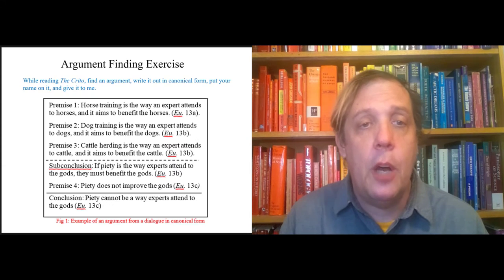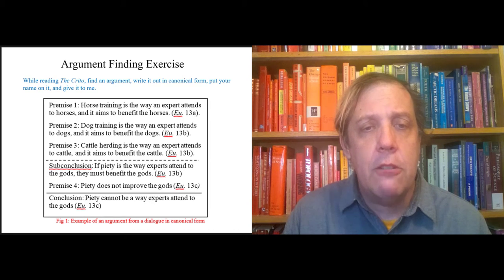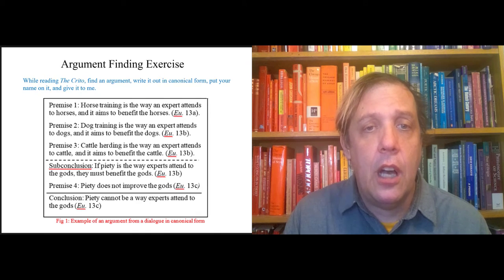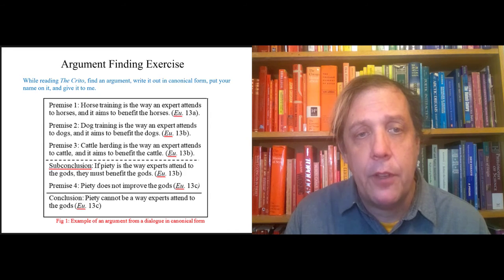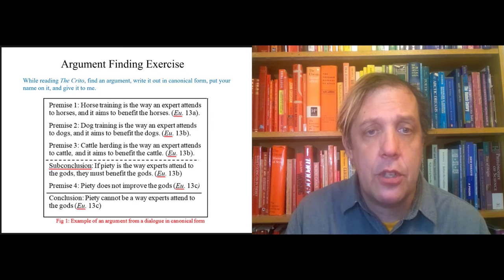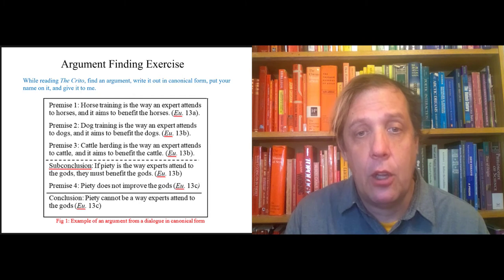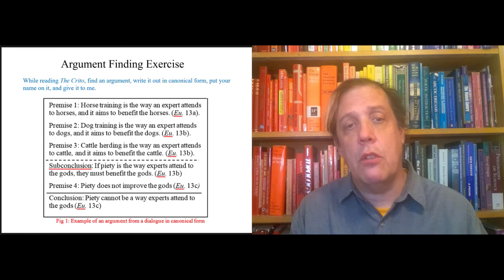So here's an example. In the Euthyphro, Socrates gives an argument that looks like this. Premise one: horse training is a way that the expert handles horses and it aims to benefit horses. Premise two: same for dog training. Premise three: same for cattle herding.